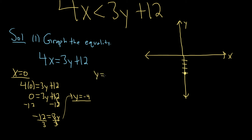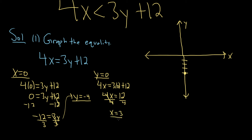Now set y equal to 0 to find the x intercept. When you set y equal to 0, you find the x intercept. Plugging in 0 gives us 4x equals 3 times 0 plus 12, so 4x equals 12. Dividing by 4 gives x equals 3. So when x is 3, y is 0 — go right 3 and up 0.